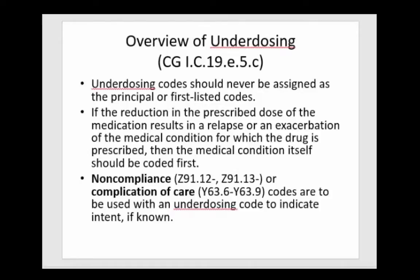Now let's look at underdosing. Underdosing codes should never be assigned as a principal or first-listed code. If the reduction in the prescribed dose results in a relapse or an exacerbation of a medical condition for which the drug was prescribed, the medical condition itself should be coded first, and then you're going to add non-compliance or complication of care along with the underdosing code to indicate intent if you know it.